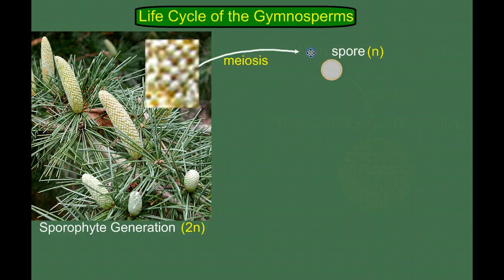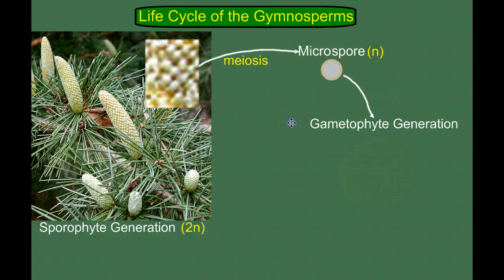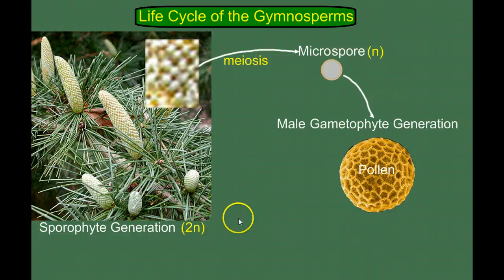Specifically, we're going to make the microspore. Remembering that seed plants are heterosporous — we have a microspore and a megaspore. So in the pollen cone, through meiosis, we make the microspore. Now, we know that spores become gametophytes, and the microspore specifically becomes the male gametophyte. And in seed plants, the male gametophyte is pollen. The male gametophyte in seed plants is pollen. This represents the gametophyte generation, at least on the male side.